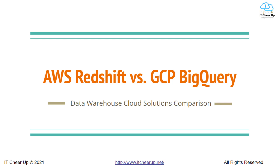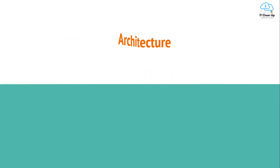Welcome back to my channel. AWS and GCP provide impressive cloud data warehouse solutions: Redshift and BigQuery. Each of these solutions can run analytic queries against petabytes to exabytes of data with high scalability, cost-effectiveness, and security. I will compare the two solutions today so you can choose based on your use cases. Both AWS Redshift and GCP BigQuery are petabyte-scale columnar storage data warehouses, specially designed for online analytical processing (OLAP) and business intelligence applications.